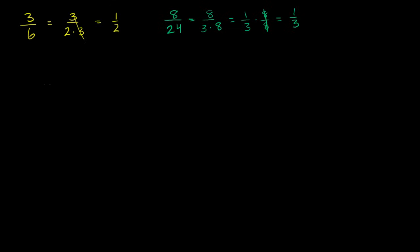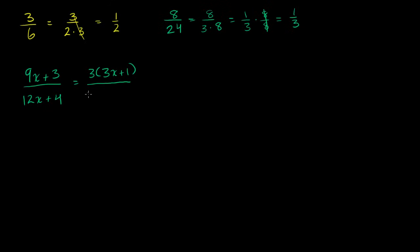Let's say that I had (9x + 3) over (12x + 4). The numerator we can factor — we can factor out a 3, giving us 3 times (3x + 1). And the denominator, we can factor out a 4, giving us 4 times (3x + 1). So just like before, the numerator and denominator have a common factor — in this case it's (3x + 1), a variable expression. They cancel out, and in lowest terms this is equal to 3/4.